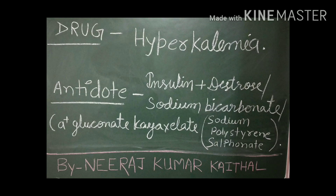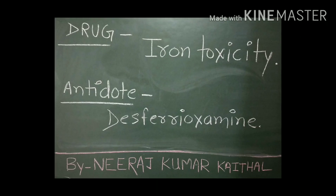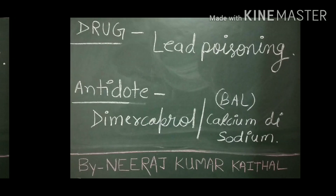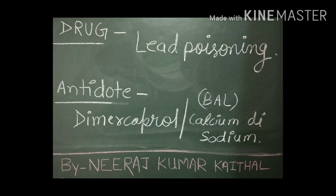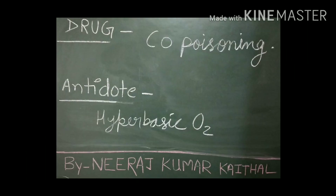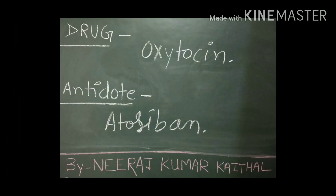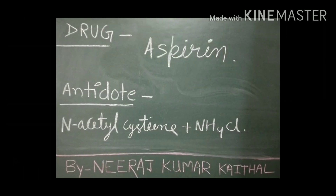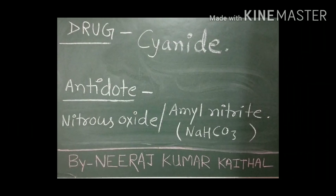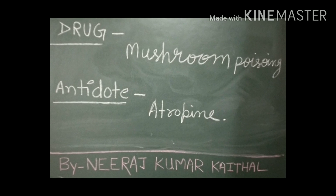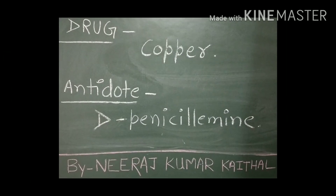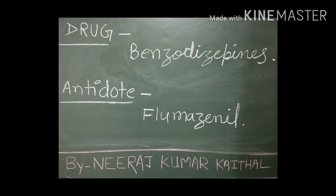Hyperkalemia — antidotes: Insulin plus Dextrose, Sodium Bicarbonate, Calcium Gluconate, and Kayexalate. Iron toxicity — antidote: Deferoxamine. Lead poisoning — antidote: Dimercaprol or Calcium Disodium. Carbon monoxide poisoning — antidote: Hyperbaric Oxygen. Snake bite — antidote: Snake Antivenom. Oxytocin — antidote: Atosiban. Aspirin — antidote: N-Acetylcysteine plus NH4Cl. Cyanide poisoning — antidote: Sodium nitrite or Amyl Nitrate and NaHCO3. Mushroom poisoning — antidote: Atropine. Copper poisoning — antidote: D-Penicillamine. Benzodiazepines — antidote: Flumazenil.